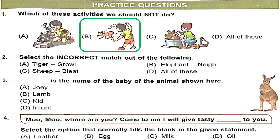Question 2: Select the incorrect match. Tiger growls — that's correct. Elephant — the option says 'knee,' but elephants trumpet. So we already have our incorrect match: Option B.